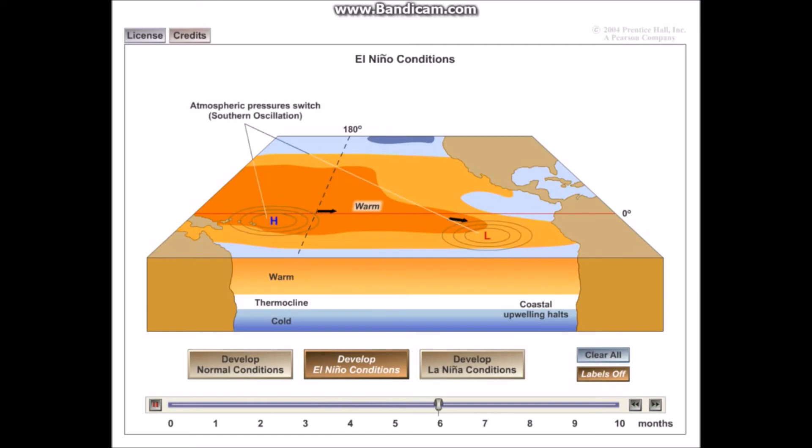Now what occurs is that you have this element that we call the oscillation or southern oscillation. It is why El Niño conditions are sometimes referred to as ENSO conditions: El Niño Southern Oscillation.